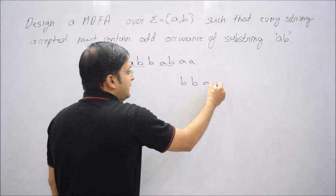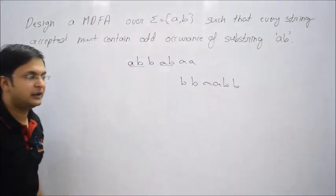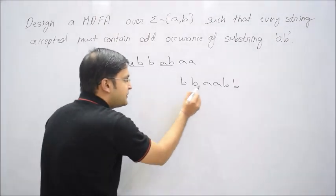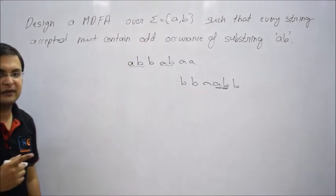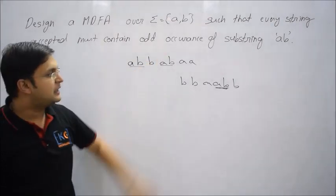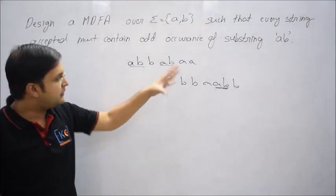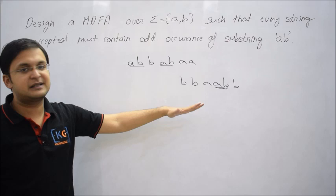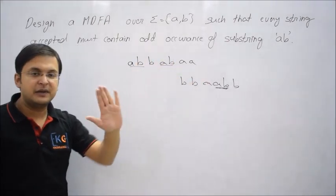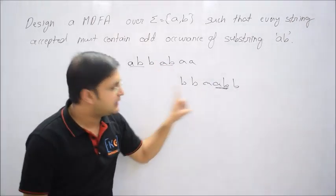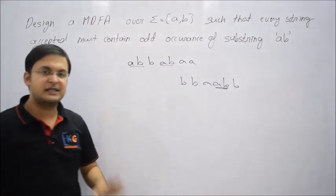Now see this: B, B, A and then AB and then B. How many times does the substring AB occur? Only one time. So that is going to be accepted. I must design a machine where every string should be accepted if it contains odd occurrence of AB.